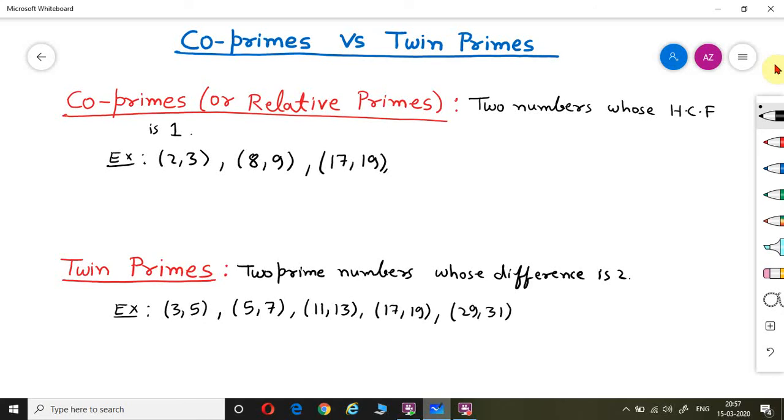29 and 31. Again you can notice it is 2 only. So we have discussed co-prime numbers and twin primes. Thank you, friends.